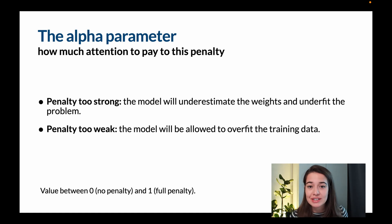Both of these techniques, L1 and L2 regularization, have a parameter called alpha that you need to tune. What alpha does is determines how much attention to pay to this penalty. So for L1, it was just the sum of all the weights, the absolute values of weights. For L2, it was the squared values of the weight, sum of squared values of the weight.